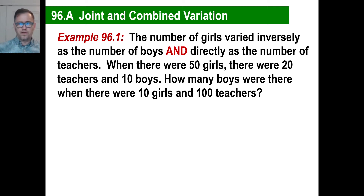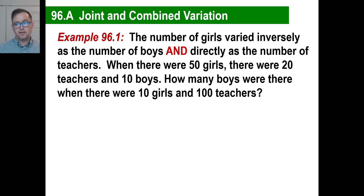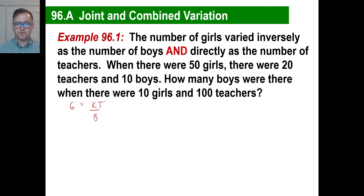Now we're going to change it up. The number of girls vary inversely as boys and directly as teachers. Remember what inversely means? We don't do a equals k times b — we do a equals k divided by b. So if girls varies inversely as boys but directly as teachers, the teachers goes on top because they're multiplying. That's our basic equation.